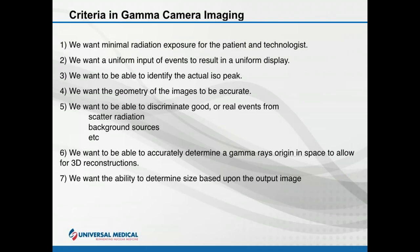When we talk about a gamma camera, we have some criteria we want to accomplish. We want radiation exposure for the technologist and patient to be as minimal as possible. We want the detection device to provide a uniform display for a uniform input — input must equal output. We also want to be able to identify the ISO peak, or energy of the isotope being utilized. Without that ability we can't distinguish between good events and garbage events.